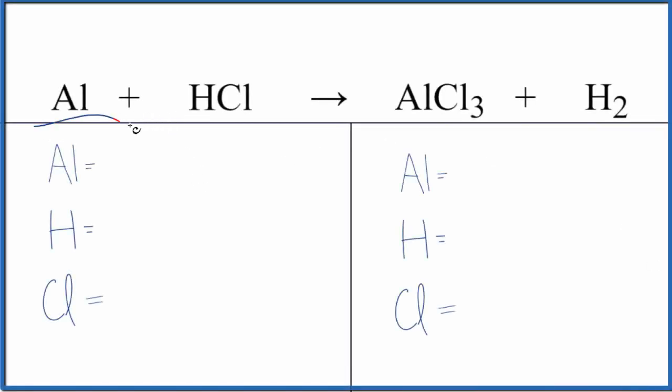Let's balance the equation for Al plus HCl. This is aluminum, and this is hydrochloric acid. We'll also look at the type of reaction and the states.